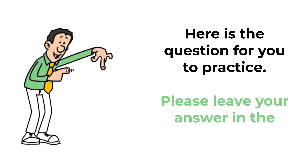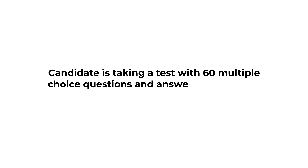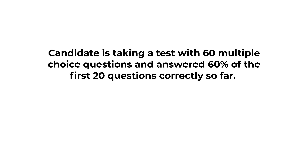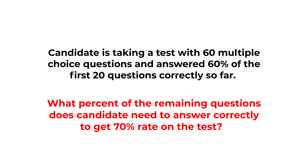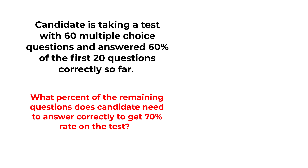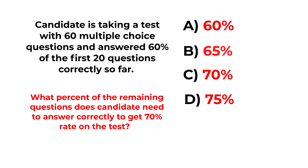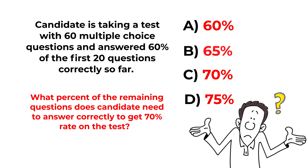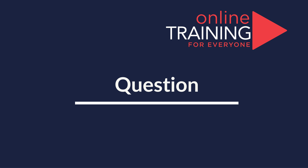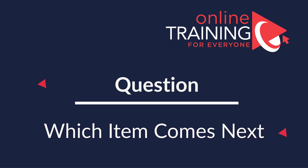Here is a question for you to try: a candidate is taking a test with 60 multiple-choice questions and has so far answered 60 percent of the first 20 questions correctly. What percent of the remaining questions does the candidate need to answer correctly to achieve a 70 percent rate on the overall test? Choices are: A — 60%, B — 65%, C — 70%, D — 75%. Please leave your calculated answer in the comment section.